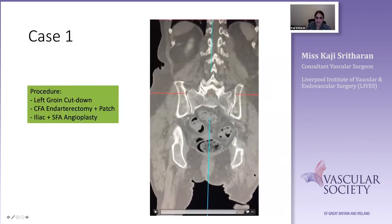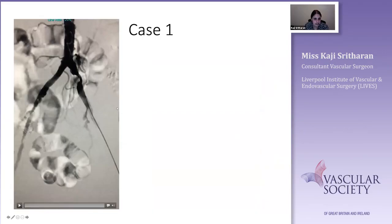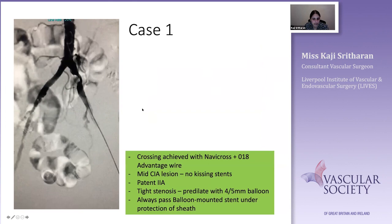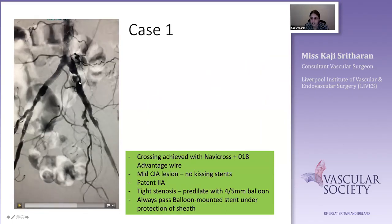This lady went on to have a left groin cut-down, endarterectomy, bovine patch, and I punctured the patch in a retrograde fashion. She had both SFA and iliac disease, so we treated the iliac inflow first, then reversed the sheath and treated the SFA. The lesion was crossed with a Navicross and an 0.018 Advantage wire. A pigtail was taken to the bifurcation, and the run showed a quite calcified, tight stenotic lesion within the common iliac — far enough from the bifurcation that kissing stents were not needed. Given the tight lesion, we pre-dilated with a 4 or 5mm balloon before introducing the 7 French sheath and balloon.